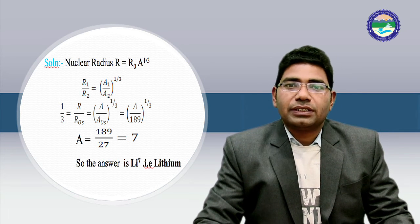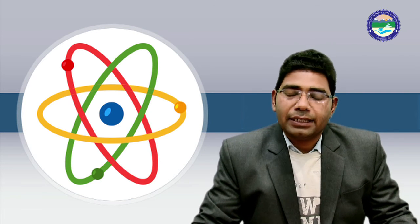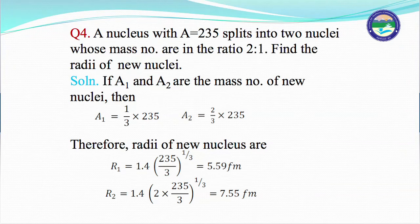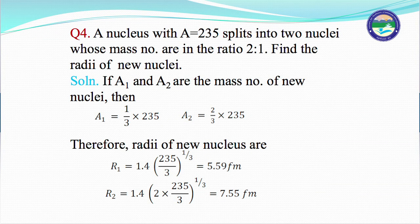I am taking another example asked in competitive exams. A nucleus with atomic number 235 splits into 2 nuclei whose mass numbers are in the ratio 2 to 1. Find the radii of the new nuclei. If A₁ and A₂ are the mass numbers of the new nuclei, then A₁ is 1 upon 3 times 235. Similarly, because the ratio is 2 to 1, A₂ equals 2 upon 3 times 235.